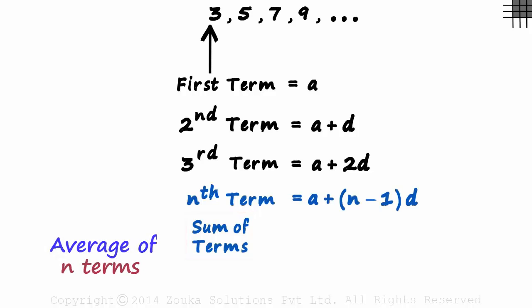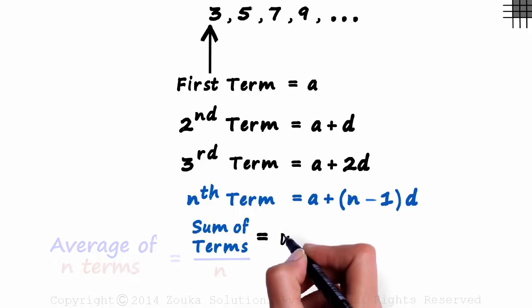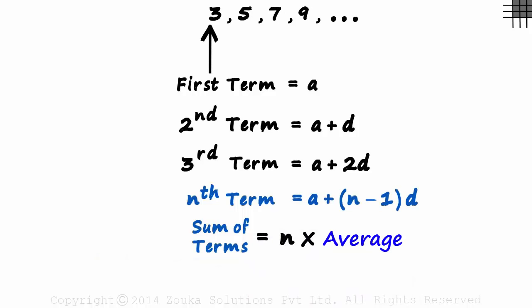The average of N terms will be the sum of terms over N. So the sum of terms will be N times the average. Understanding the average is the best part of it.